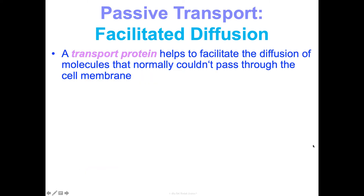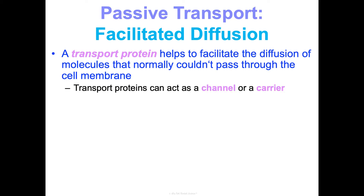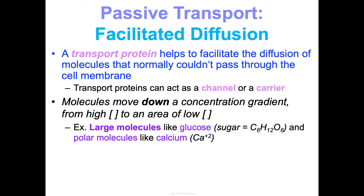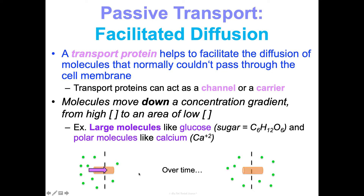Facilitated diffusion is really similar — it just needs a little more help. A transport protein helps facilitate the diffusion of molecules that normally couldn't pass through the cell membrane on their own. The protein can act as a channel, like a tunnel, or it can act as a carrier and physically carry the substance across the membrane. Molecules are still going down the gradient from high to low — they're just getting help from a transport protein. This is how large molecules like glucose (C6H12O6) and some polar molecules like calcium move. Over time, equilibrium is reached on either side of the cell membrane.